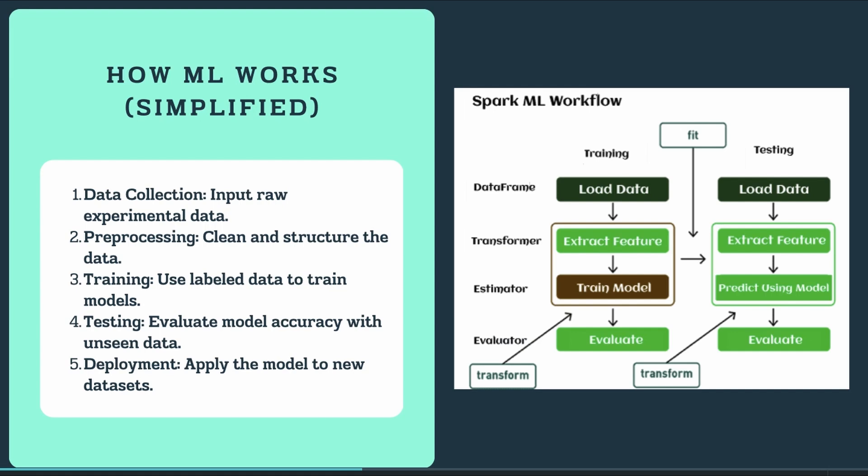So how does ML work in practice? It all starts with data collection. Raw experimental data — such as gene expression levels or protein measurements — are collected from experiments. The first step is always data: if a problem is interesting to us, the first thing we need to do is collect the relevant data.